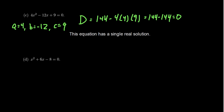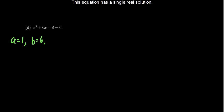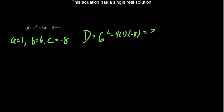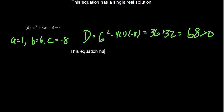For the last example, x squared plus 6x minus 8: A equals 1, B equals 6, and C equals negative 8. The discriminant is 6 squared minus 4 times 1 times negative 8, which is 36 plus 32, giving us 68. Since 68 is positive but not a perfect square, this equation has two real solutions which are irrational, because the solutions will involve plus or minus the square root of 68.